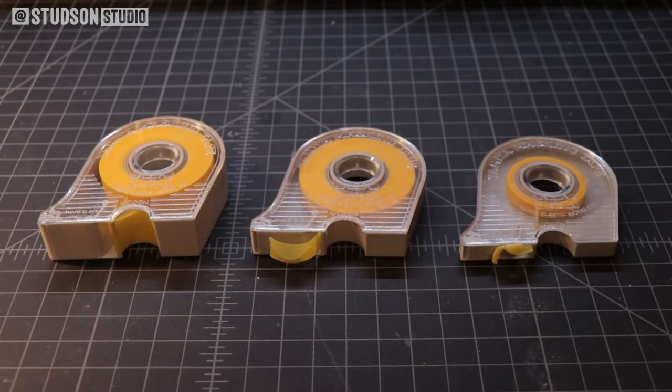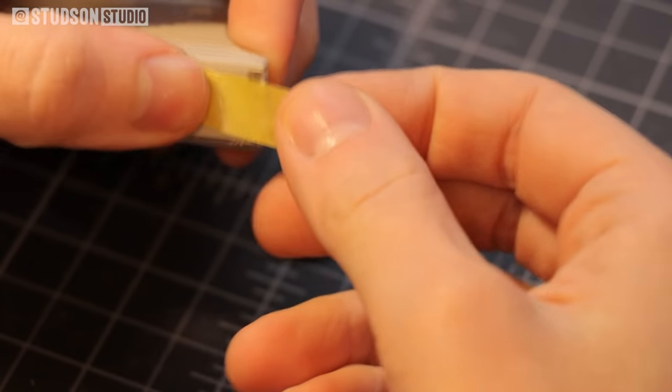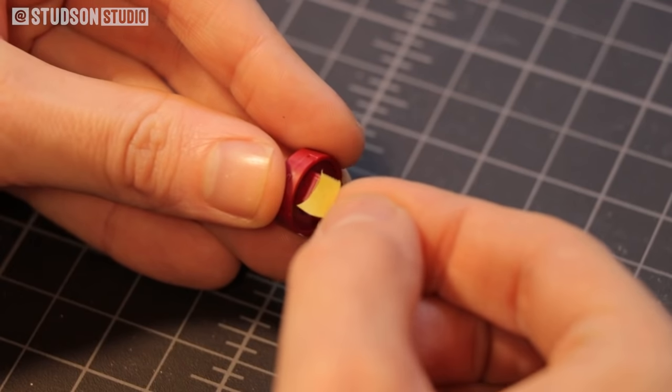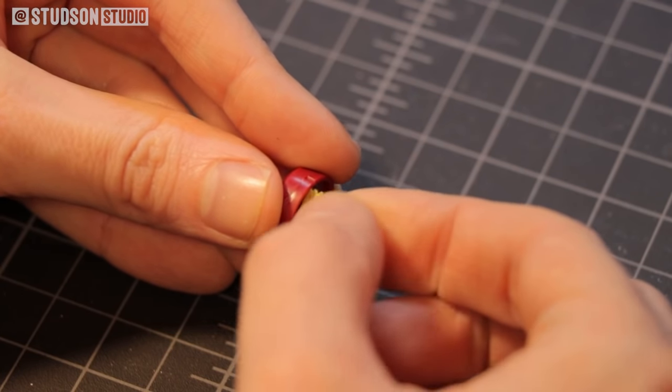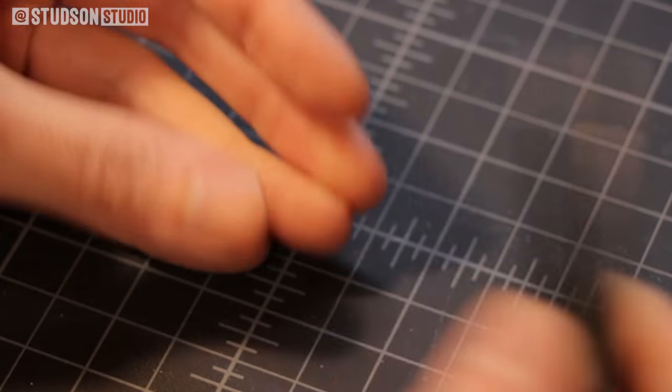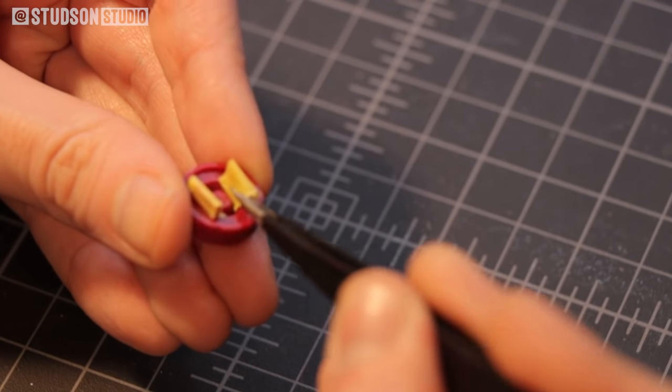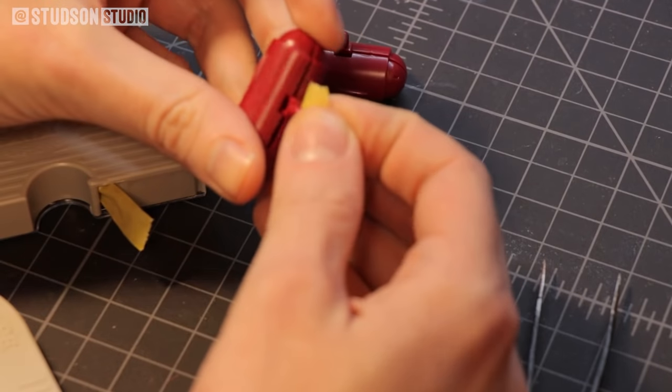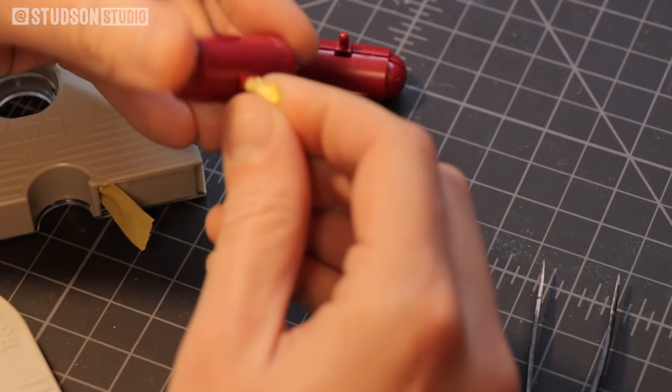Let's start with prepping the model for painting. I skipped filming the part where I clip out all the pieces and sand them because it's super boring. So I'm just going to start with taping up all the parts I don't want to actually paint. That means masking out all the joints and the connector pieces that would be hard to put together if they were covered in a thick layer of paint.